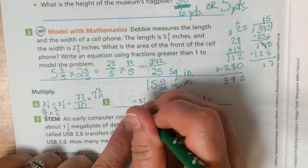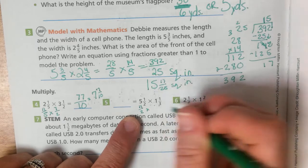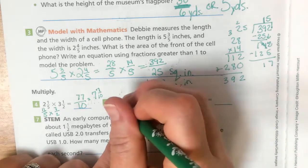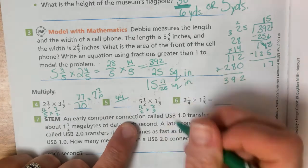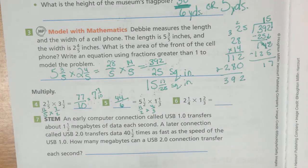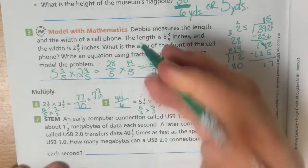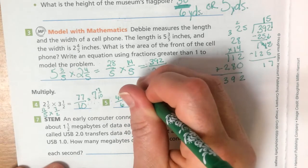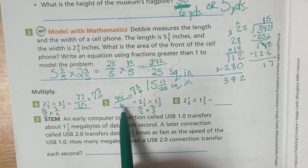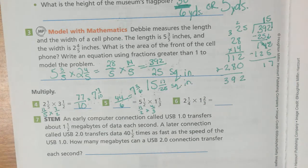5 times 2 is 10 plus 1 is 11 halves. Times 1 times 3 is 3 plus 1 is 4 thirds. 44 sixths. So, 44 divided by 6 would be 7 and 2 sixths. All right. Because, 7 times 6 is 42. 44 minus 42 is 2.